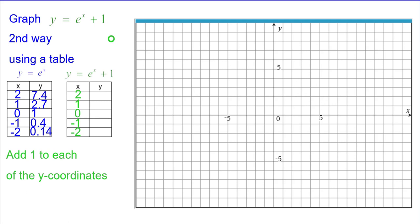So here the 7.4 will go up to 8.4 and plotting 2 comma 8.4. 2.7 will go up to 3.7, 1 comma 3.7. 1 goes up to 2, 0, 2. Negative 1 comma 1.4 will be our new point. And negative 2 comma 1.14 will be our last point.